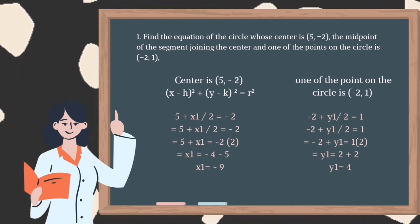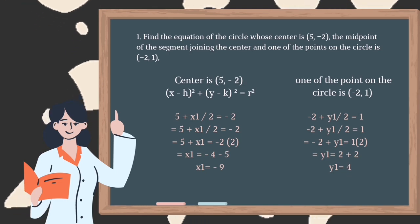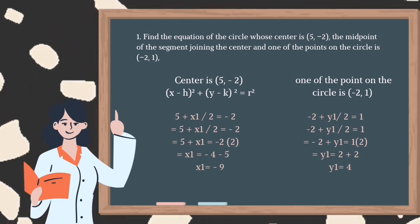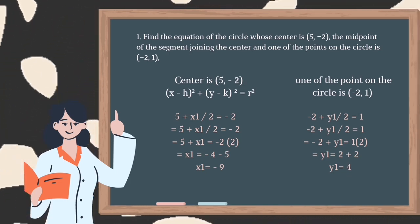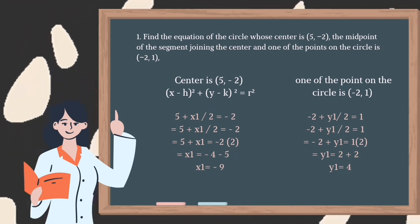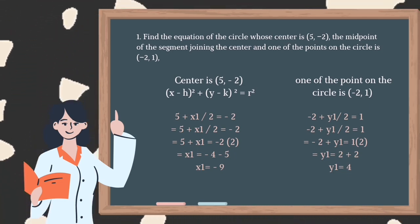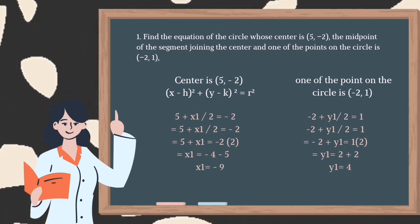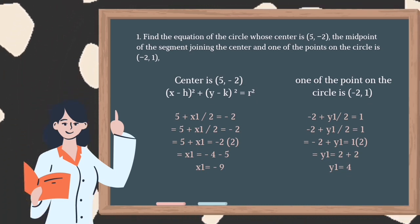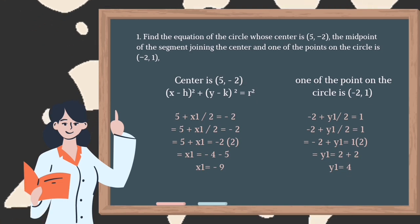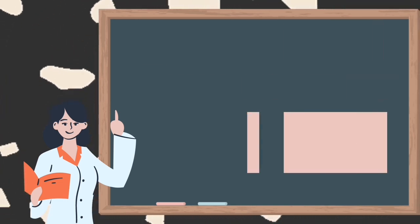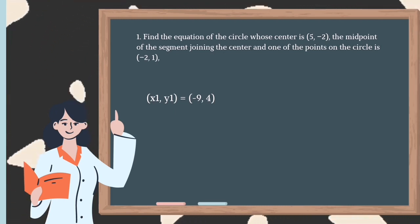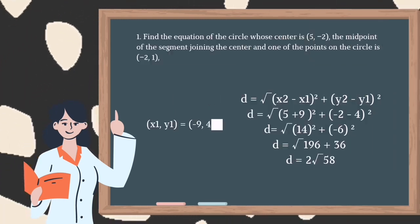Therefore, our x₁ is equal to -9. Then y₁ is equal to 2 plus 2, so our y₁ is equal to 4. Therefore, our (x₁, y₁) is equal to (-9, 4).